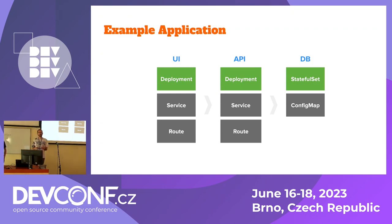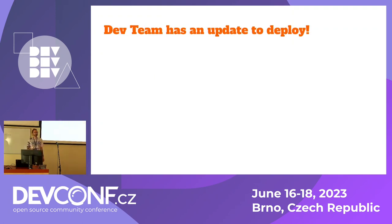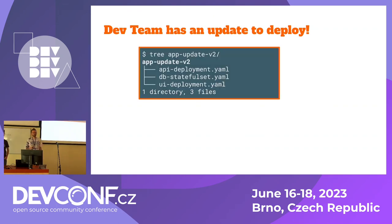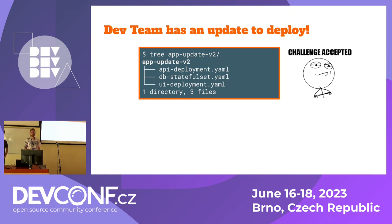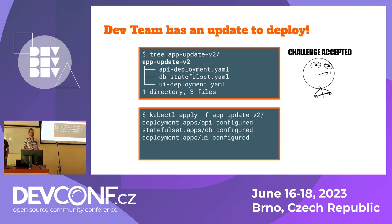Let's assume you already have this beautiful application running on your Kubernetes cluster and everything works fine — life is good. But then at some point the dev team wants to deploy an update. So you as an SRE, without big processes in place, get from the dev team a folder with some YAML files containing the deployment and the stateful set for the database. You look at it, it's all fine, you accept the challenge, and you deploy it using your beloved kubectl command and apply the whole folder.